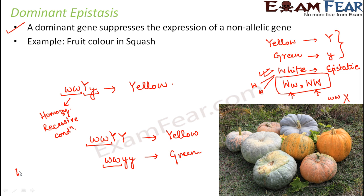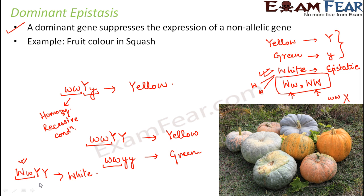But if you have capital W small w, capital Y capital Y — whenever W is present in its dominant condition, the dominant allele of white is present, so white will show its epistatic effect. Even though yellow is dominant over green, white will hide the phenotype of yellow, so the fruit color would be white. Whenever you have capital W small w or capital W capital W, the phenotype is going to be white. Otherwise, the phenotype is determined by yellow and green: homozygous small y small y gives green, and anything else gives yellow.